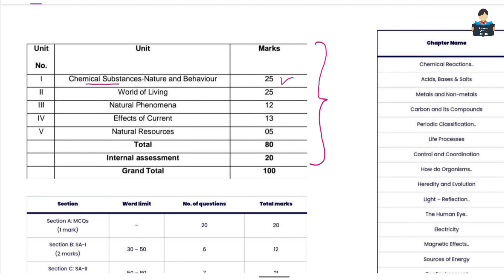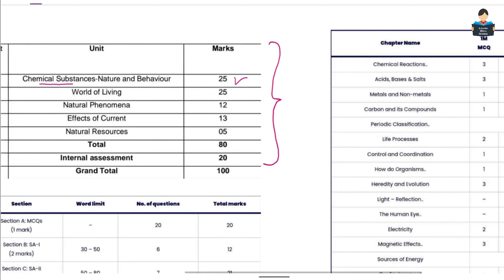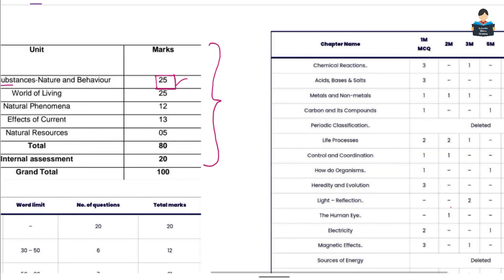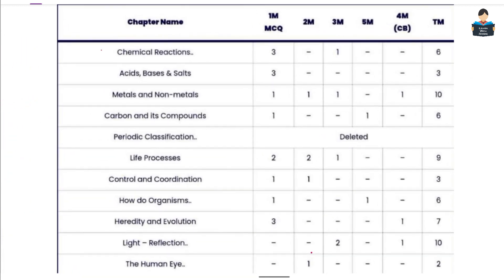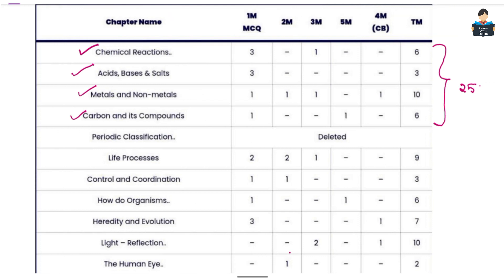In the first unit, Chemical Substances, Nature and Behavior, we will see 4 chapters — the 1st, 2nd, 3rd and 4th chapters. We will see a total of 25 marks. This is the sample paper base and prepared blueprint, and more or less it remains the same pattern for the chapters.